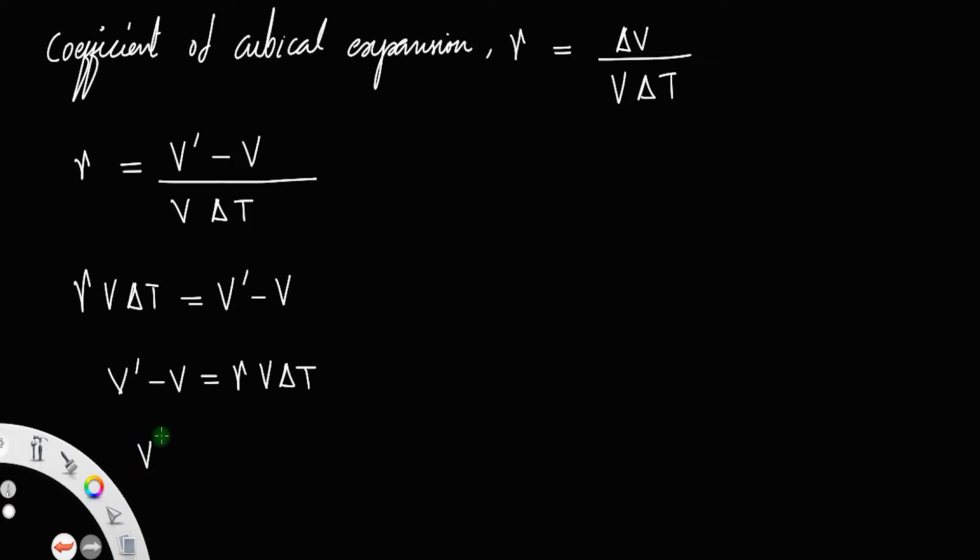You can take this V to the right. So V dash is equal to V plus gamma V delta T, or V dash is equal to V into 1 plus gamma delta T.